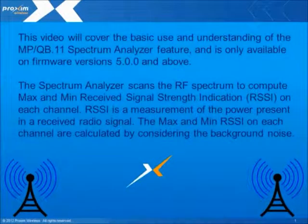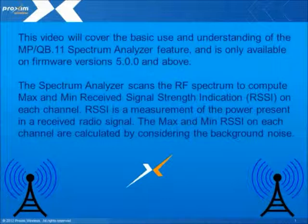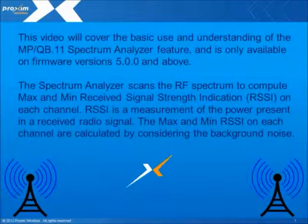This video will cover the basic use and understanding of the MP-QB11 spectrum analyzer feature. This feature is available only on firmware version 5.0 and above. The spectrum analyzer scans the RF spectrum to compute the max and min received signal strength indication on each channel. RSSI is a measurement of the power present in the received radio signal, and the max and min RSSI in each channel are calculated by considering the background noise.